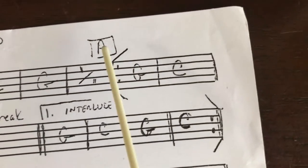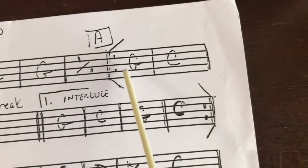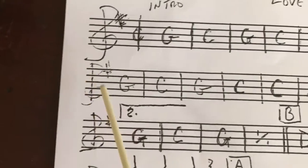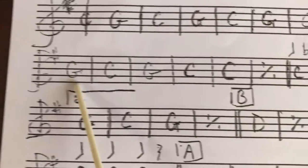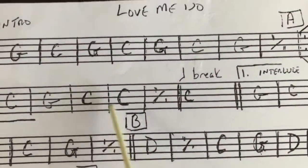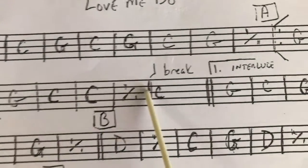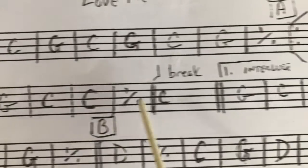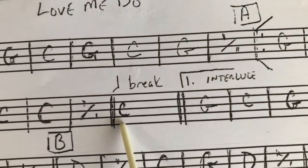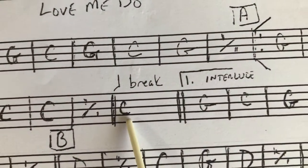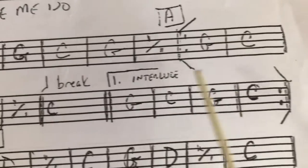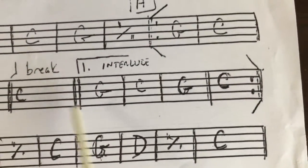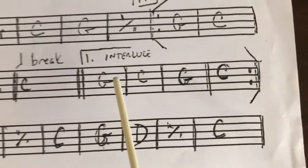Then we go to our A section. You'll notice there are repeat signs here that we're going to come back to. The chord sequence goes G, C, then on the next line G, C, G, C, and then a repeat of C. We're going to repeat C again, so we have three measures of C in a row, and then our break on a C chord. That takes us to the first ending.